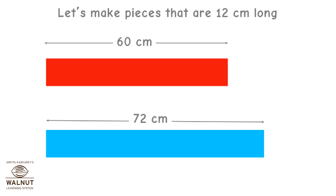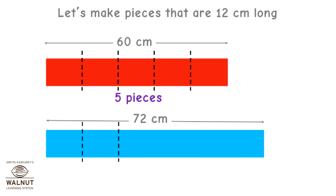We have found the HCF and it is 12. As it is our highest common factor, we can make pieces of 12 cm. Let's try: we can divide the 60 cm ribbon into 5 pieces with no ribbon left, and the 72 cm ribbon into 6 pieces with no ribbon left. The length of each piece is 12 cm — that is the longest piece and that's the answer.